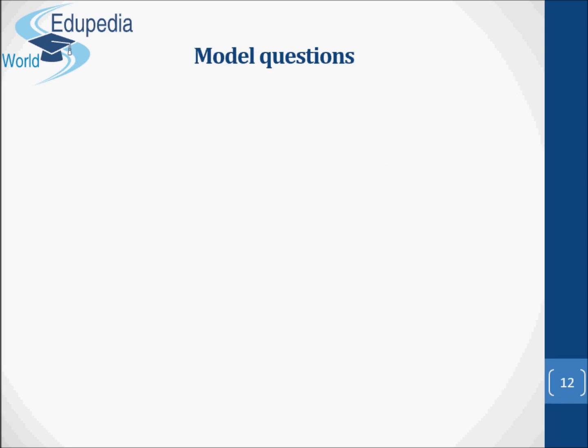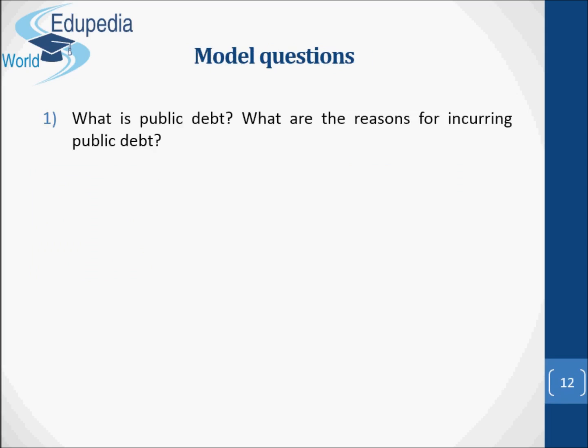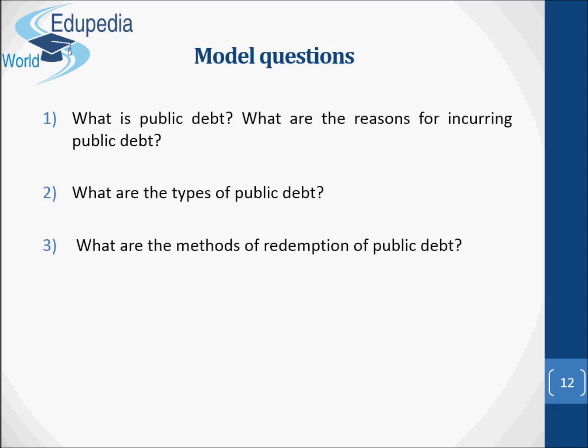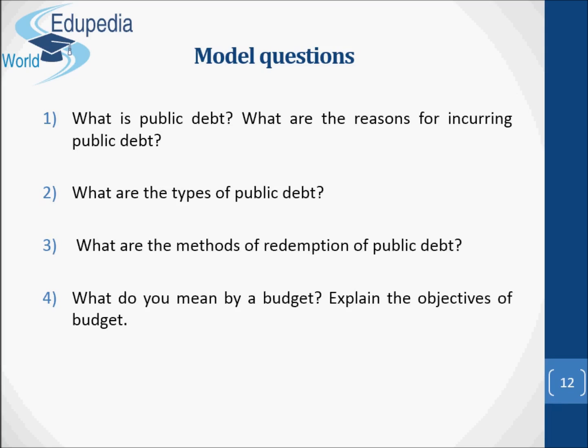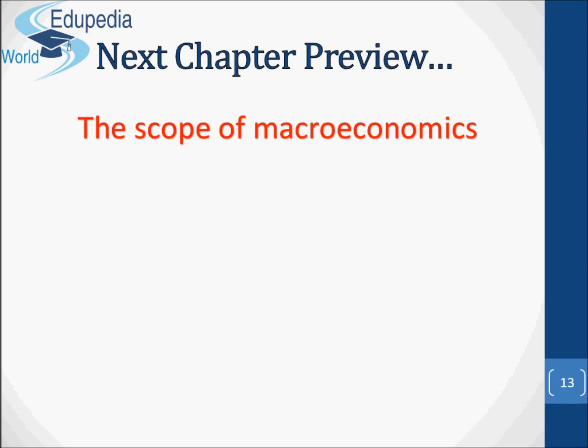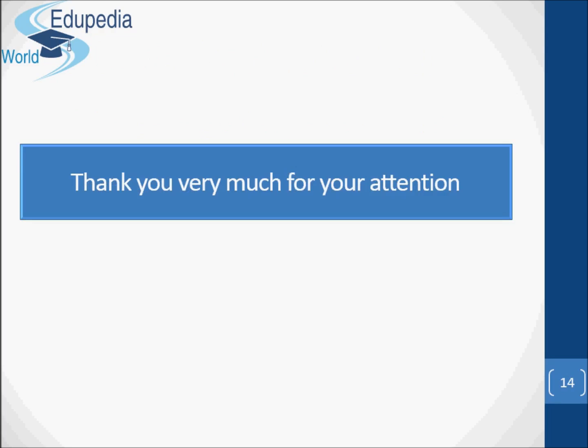Now let me present some model questions: 1. What is public debt? What are the reasons for incurring public debt? 2. What are the types of public debt? 3. What are the methods of redemption of public debt? 4. What do you mean by budget? Give some explanations of the objectives of budget. The responses and answers to these questions were already covered in this video. This is the end of this part. In the next part, we are going to talk about macroeconomics. Thank you very much for your attention.